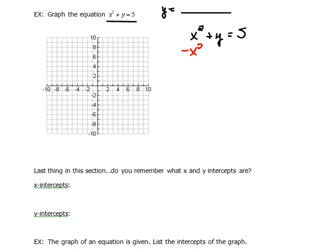So let's subtract x squared from both sides so that we get the y alone. Now we have y equals 5 minus x squared. Now that we can actually put into our calculator and find the graph of.